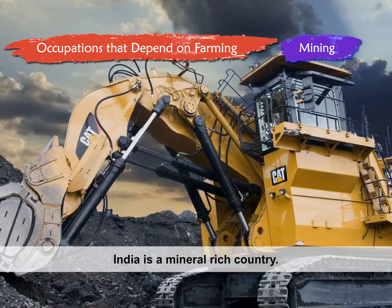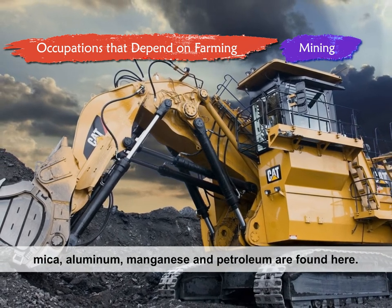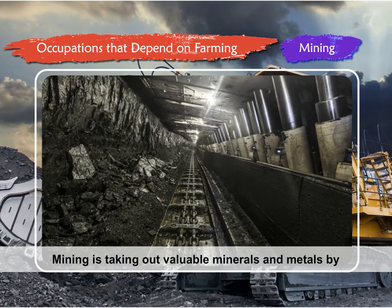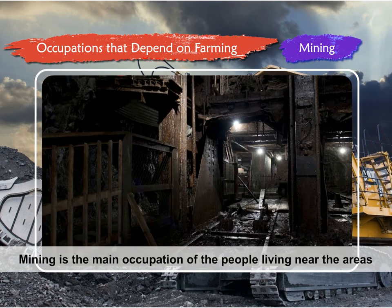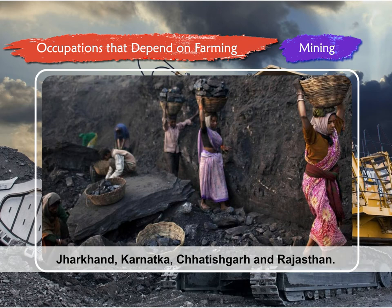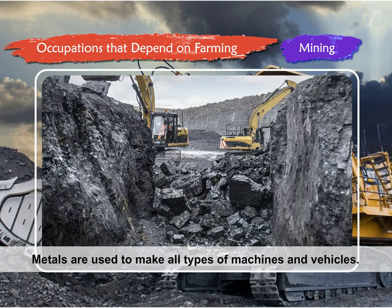Mining. India is a mineral-rich country. Many types of minerals like iron, coal, mica, aluminium, manganese, and petroleum are found here. Mining is the process of taking out valuable minerals and metals by digging the earth. Mining is the main occupation of people living near areas with mineral deposits. Some states of India have rich deposits of minerals, like Odisha, Jharkhand, Karnataka, Chhattisgarh, and Rajasthan. These minerals are refined into metals, which are used to make all types of machines and vehicles.